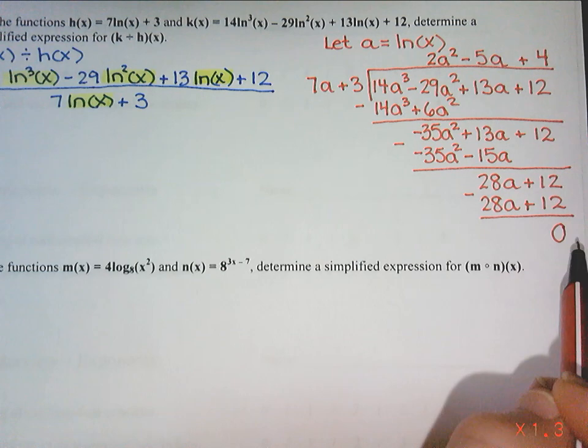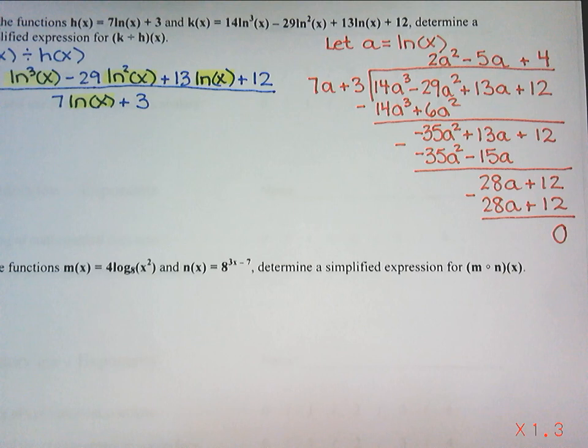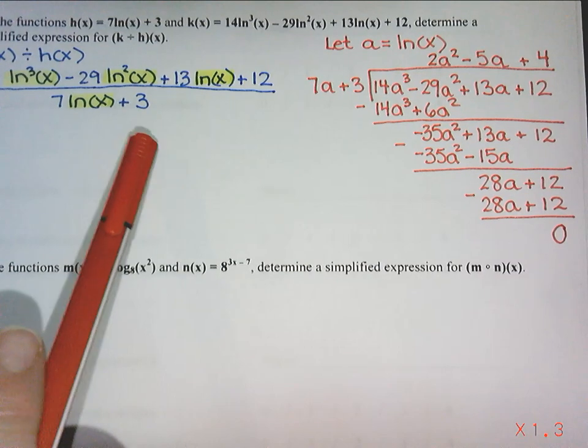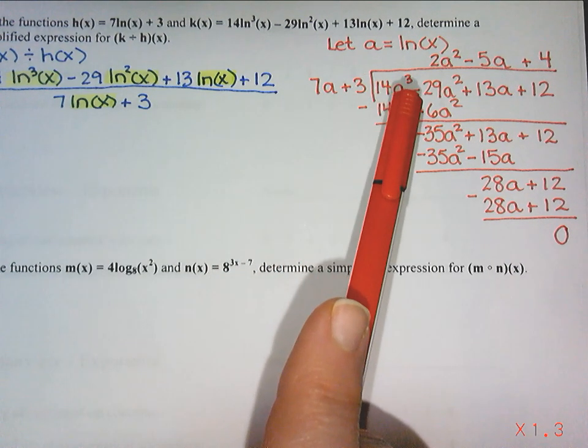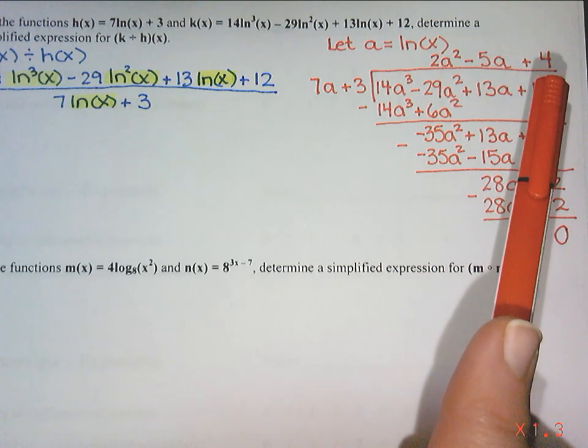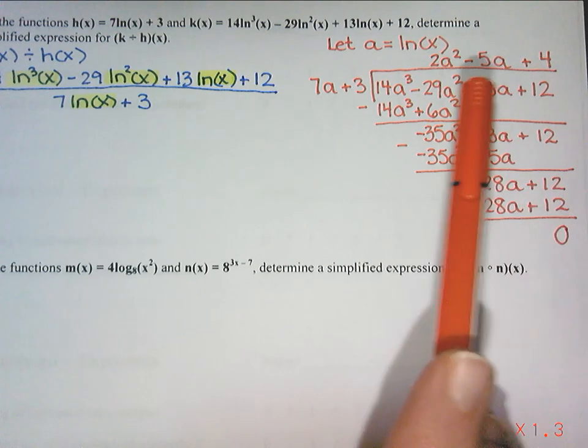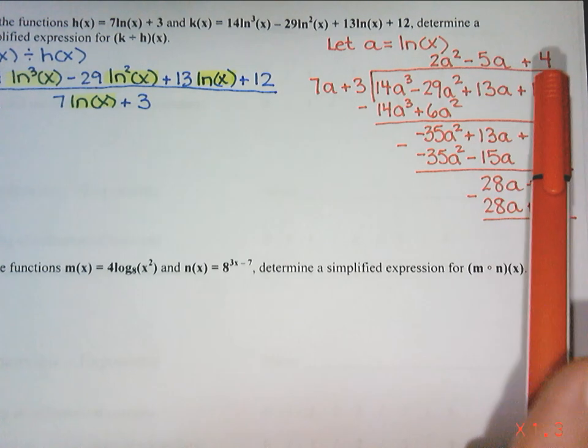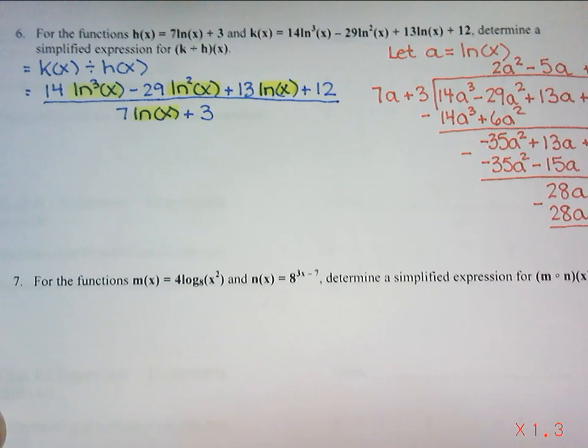Because the remainder is 0, that tells me that it divides in evenly. So I need to go back and try to figure out how we're going to take this and turn it into the answer. How many times did 7a plus 3 go into this expression? It went in 2a squared minus 5a plus 4 times with a remainder of 0. So nothing left over. So it basically just went in 2a squared minus 5a plus 4 times. And we're going to take those a's and replace them with ln x's.